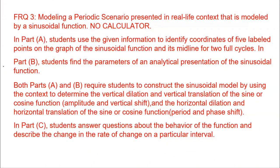In the third FRQ for the AP pre-calculus exam, students will work on modeling a periodic scenario presented in a real-life context, modeling that situation with a sinusoidal function — no calculator allowed. In Part A, students use given information to identify coordinates of five labeled points on the sinusoidal function and its midline for two full cycles. In Part B, students find the parameters of the analytical representation of the sinusoidal function, constructing the model using vertical dilation, vertical translation, horizontal dilation, and horizontal translation — affecting amplitude, vertical shift, period, and phase shift.